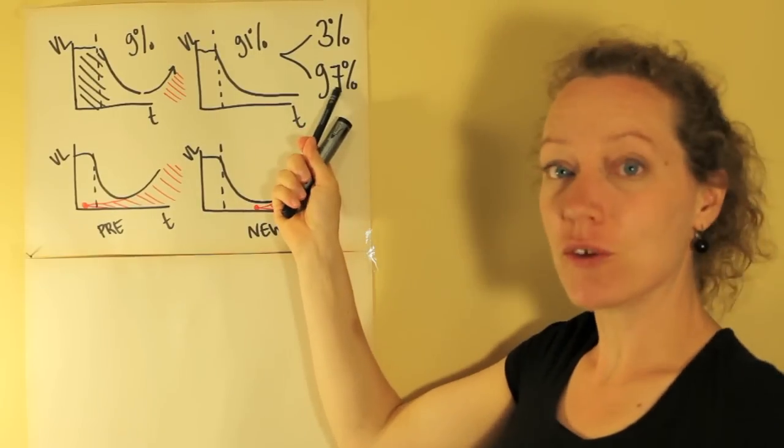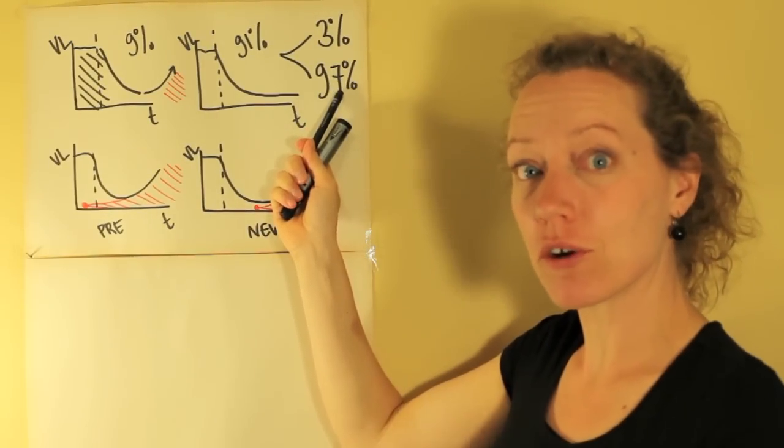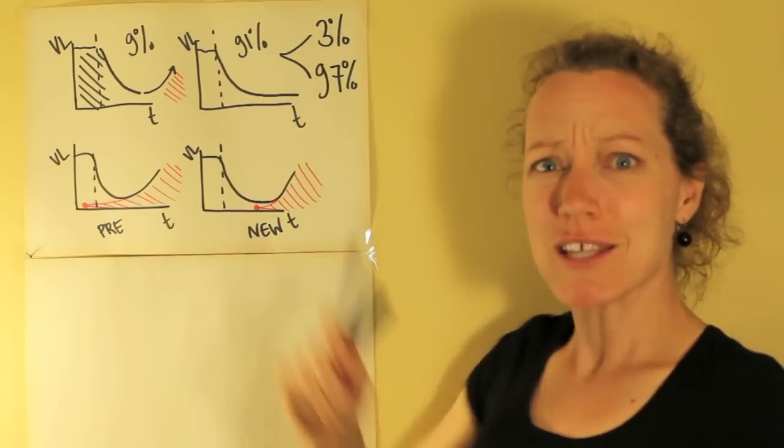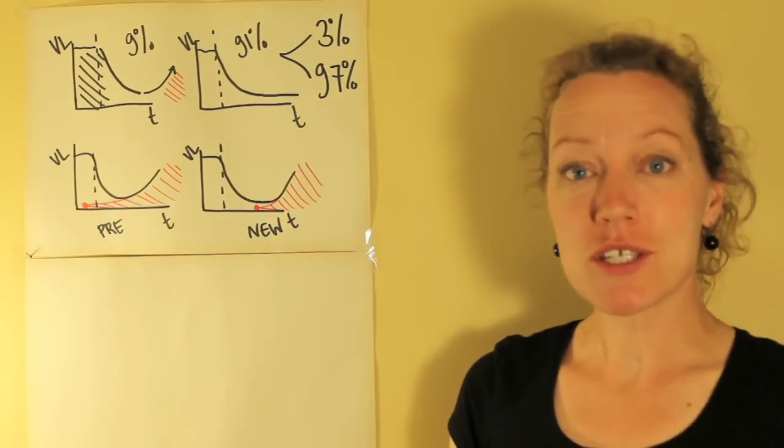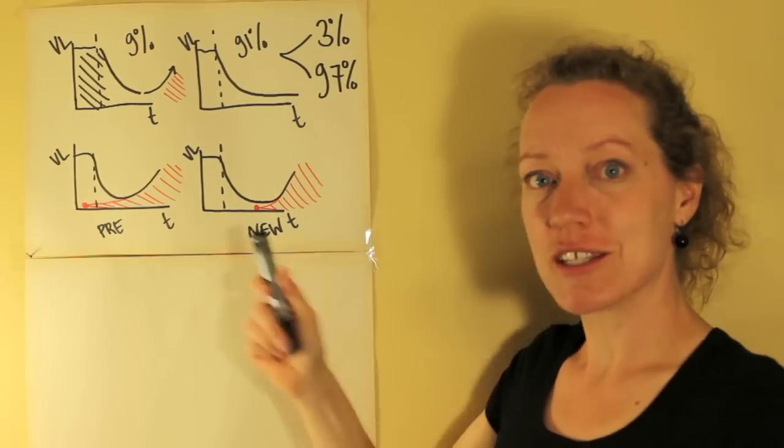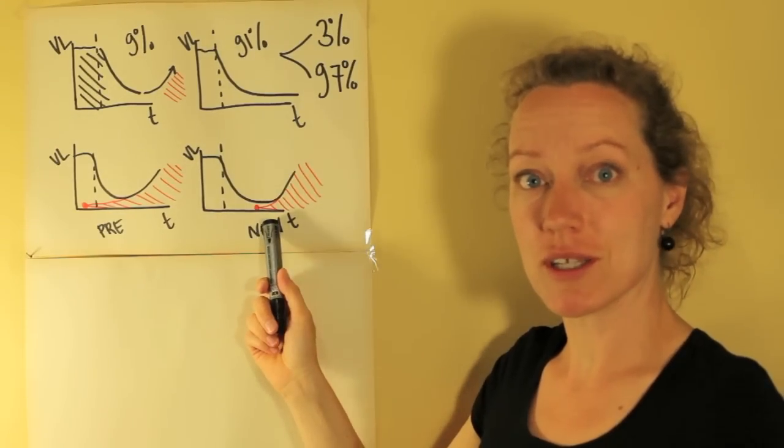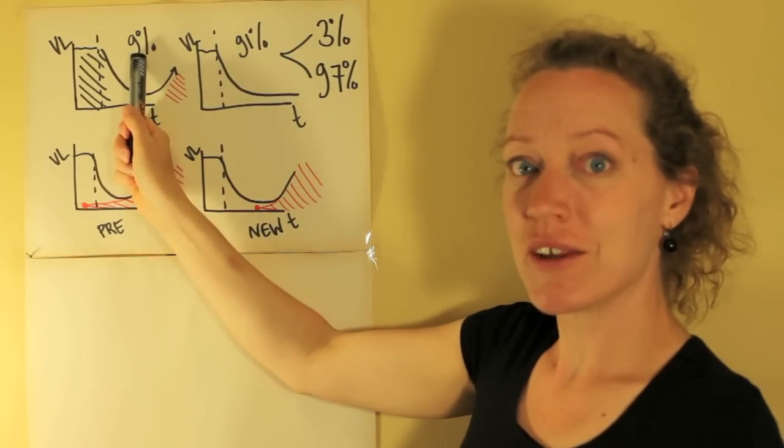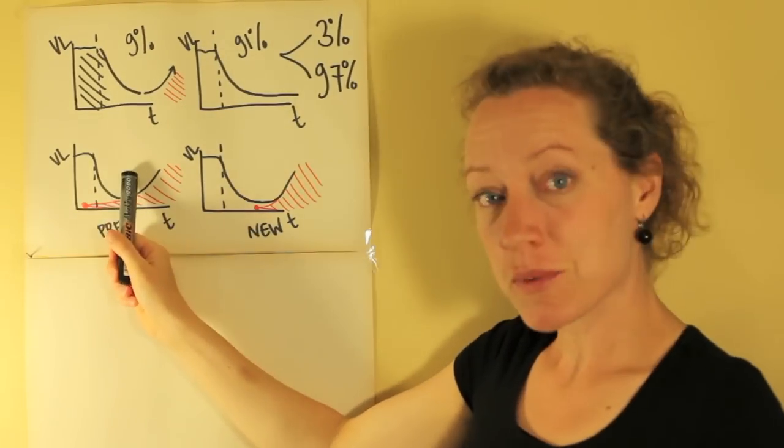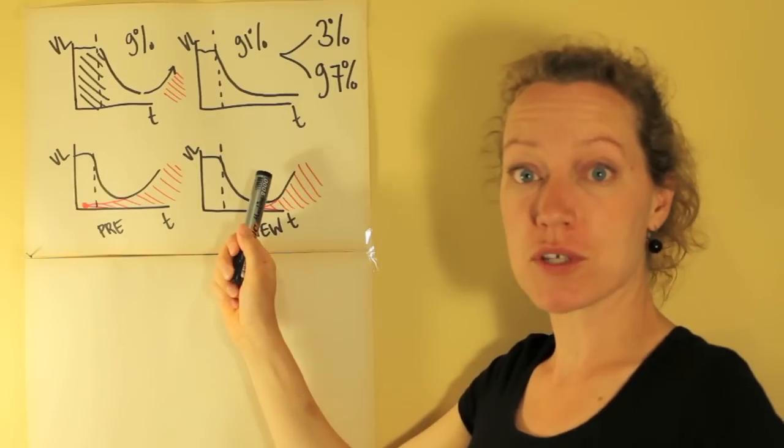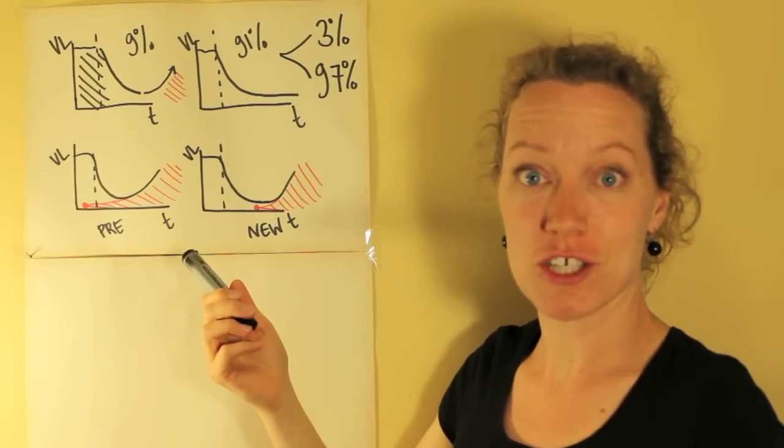When they followed the 97 percent in the third year of treatment, again in three percent of them the virus became resistant. And so that suggests that the three percent is a constant and it's due to these new mutations that can occur even during treatment. And that means that out of that nine percent, probably six percent is due to pre-existing mutations and three percent is due to these new mutations.